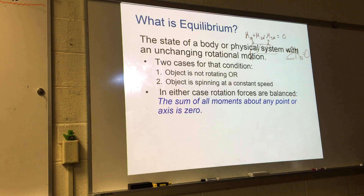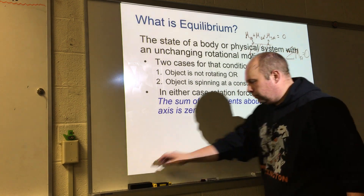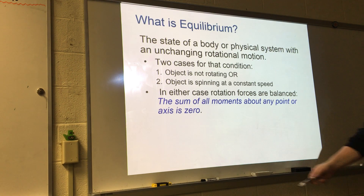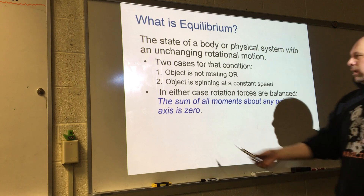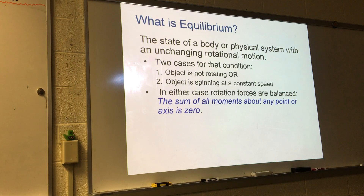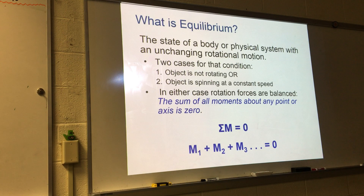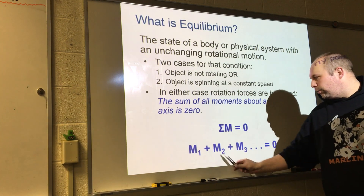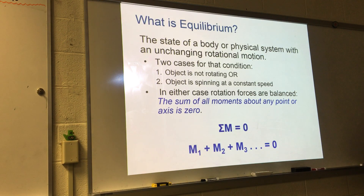When the sum of moments equals zero, we say the object is in equilibrium — it's either not spinning or not accelerating. This is one of the conditions of equilibrium: the sum of all moments around any point equals zero. This holds whether you have two moments or three or fifteen — they must all sum to zero.